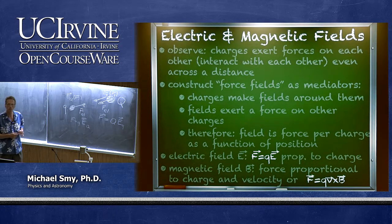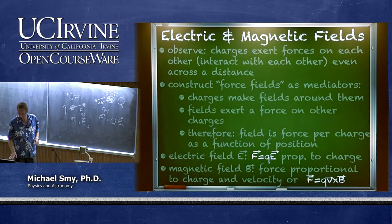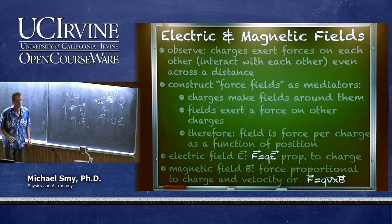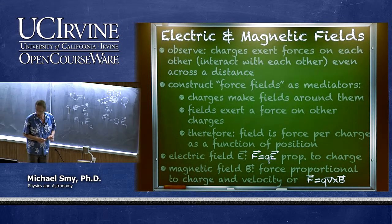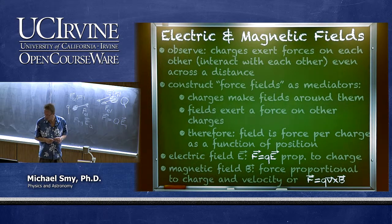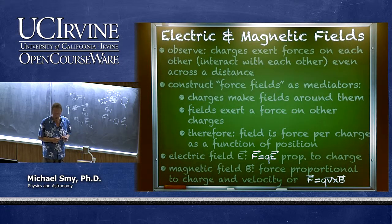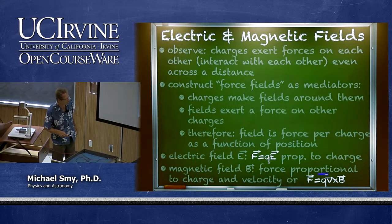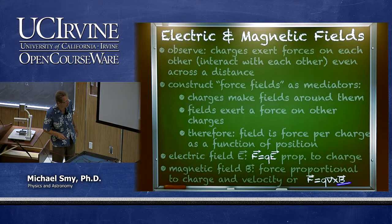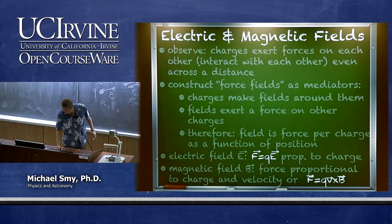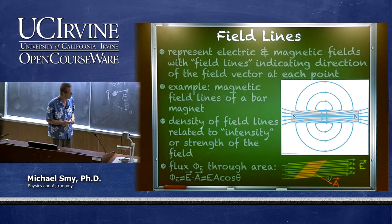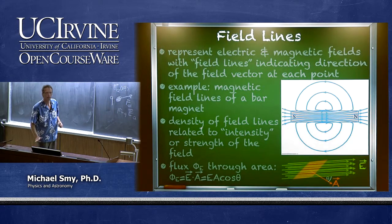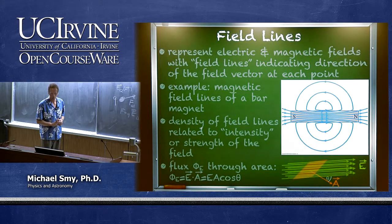There are actually two such fields in electromagnetism. One is the electric field, where the force is proportional to the charge. Then there is a magnetic field, where the force is proportional to the charge and the velocity of that charge. This is the so-called Lorentz force: F = q(v × B). So now we have these new entities — electric and magnetic fields — and we can represent them by field lines.